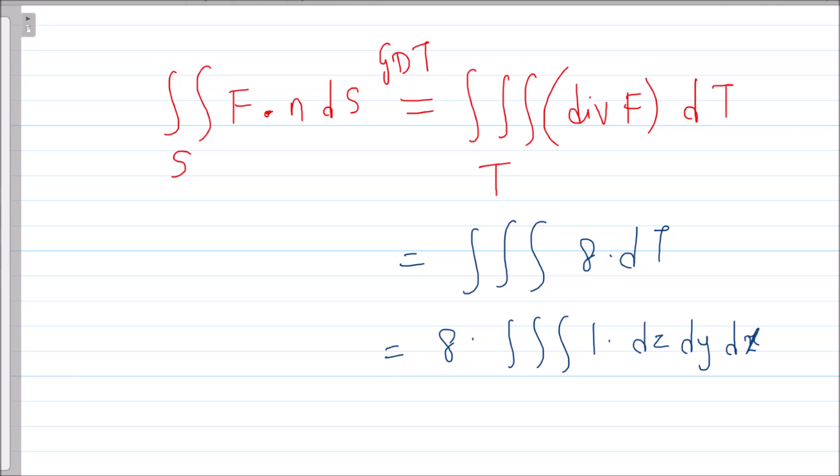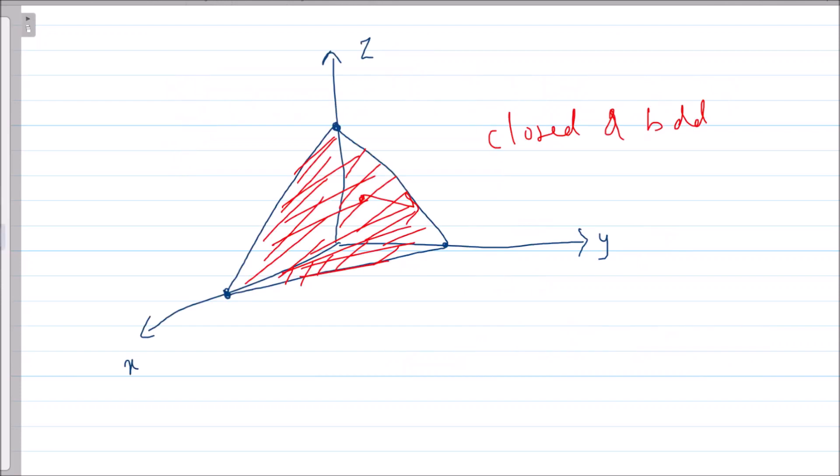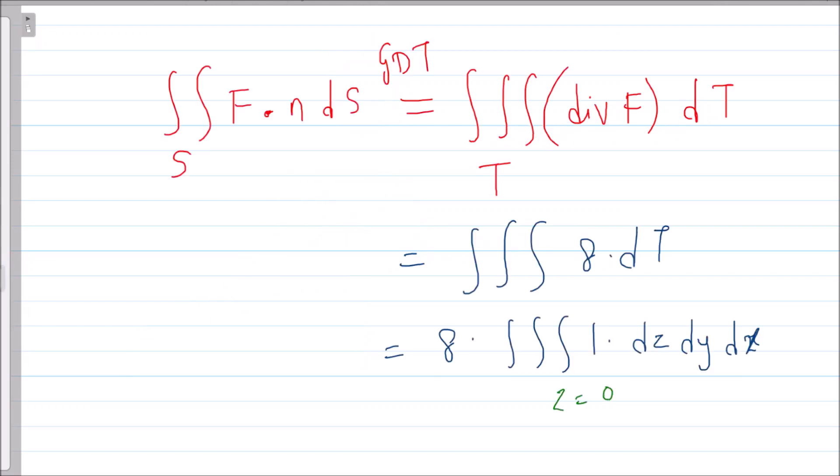If you know a formula, if at all there is one, then you can use that formula. Or in this case, we will try to find the limits. So what are the limits for z axis? For z axis, we draw the line parallel to z axis. So it is entering from this xy plane and coming out of the given plane. So the limits of z are 0 to 1 minus x minus y.